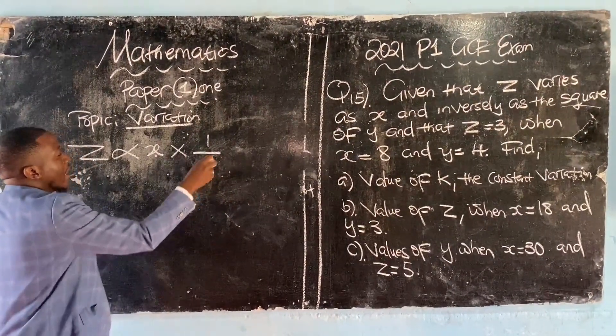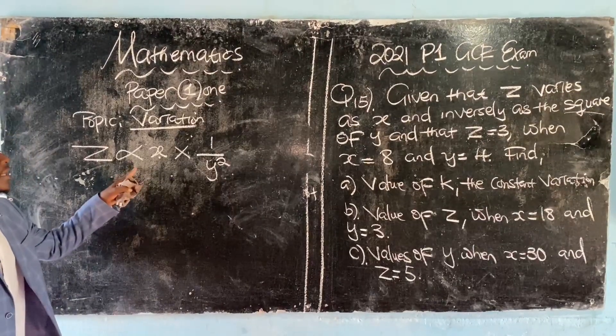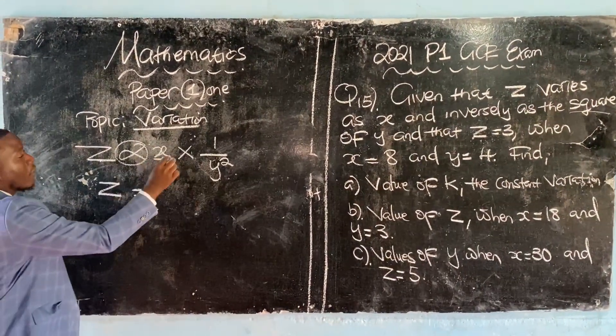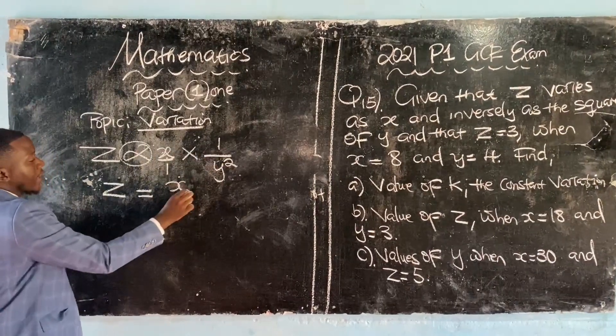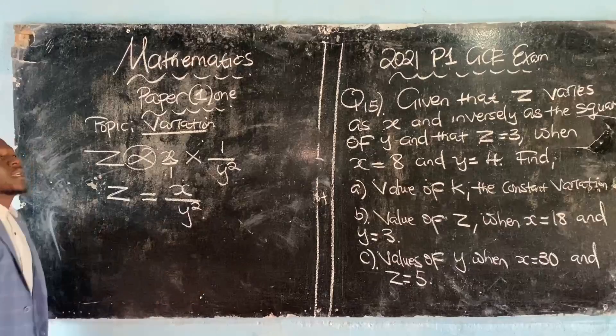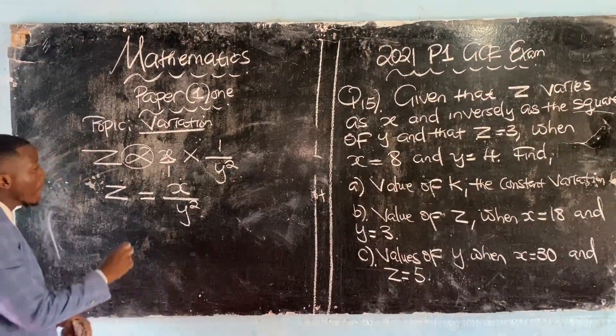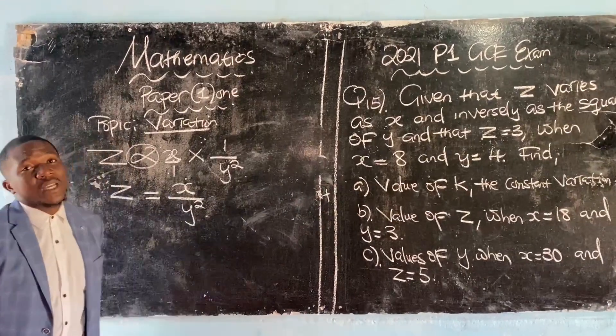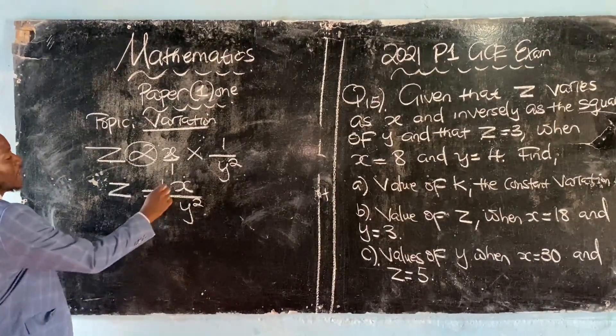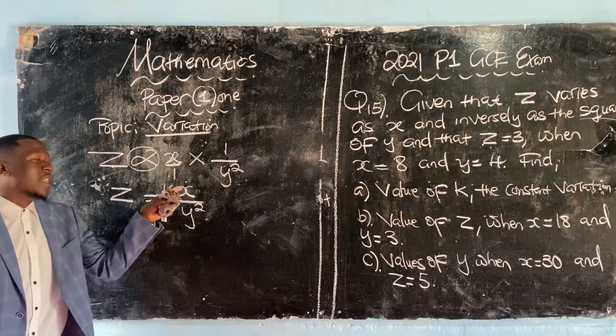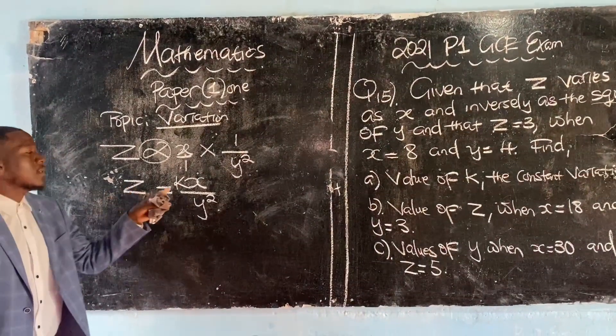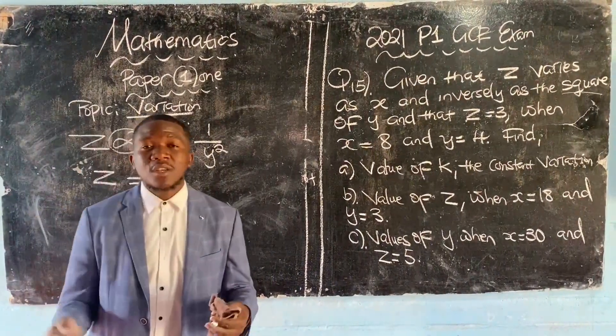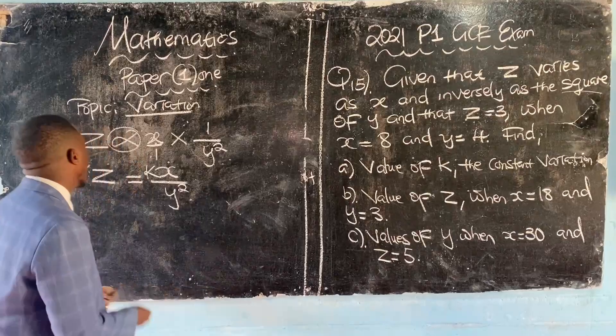We're going to say z inversely as the square of y means one over y squared. Then we turn this into an equation where we replace the variation symbol with an equal sign. So this becomes z equals x over y squared. Then we attach the variable k which represents the constant of variation, so z equals kx over y squared.